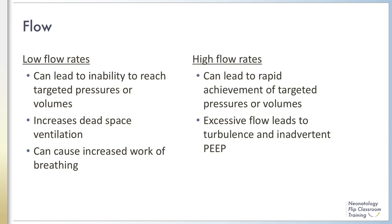Flow refers to the amount of gas circulating through the ventilator during a given amount of time — in other words, the rate of gas delivered in the ventilator circuit. Flow rates are set by the clinician, and usually 6 to 10 liters per minute is sufficient. This parameter is generally not adjusted during ventilation. Peak flow rate is the maximum flow rate delivered by the ventilator during an inspiration, and is used to deliver the set pressure or volume.